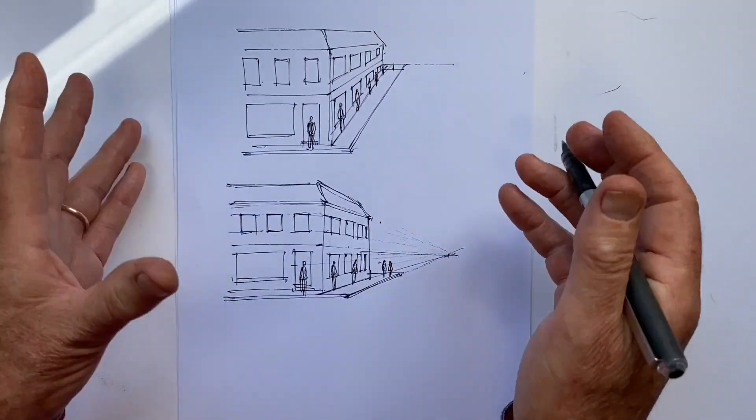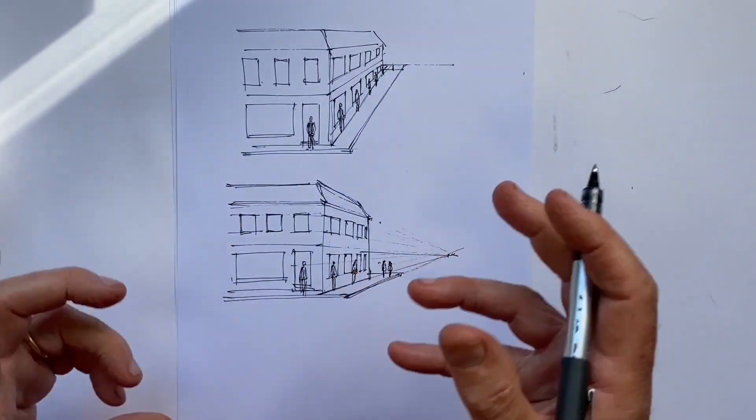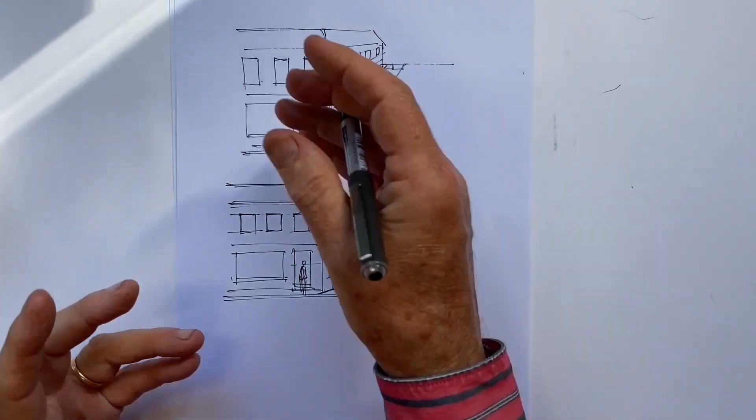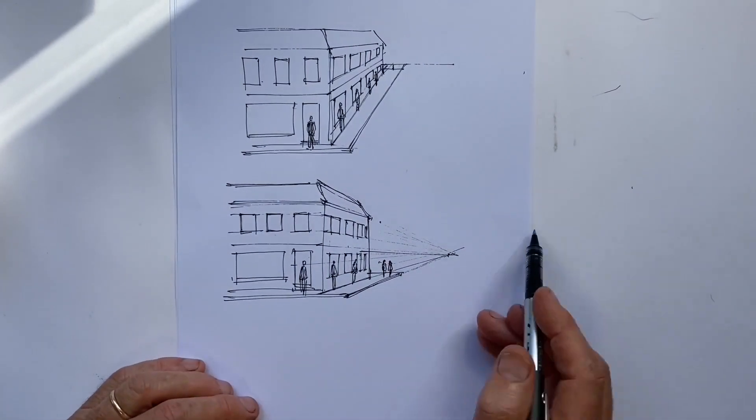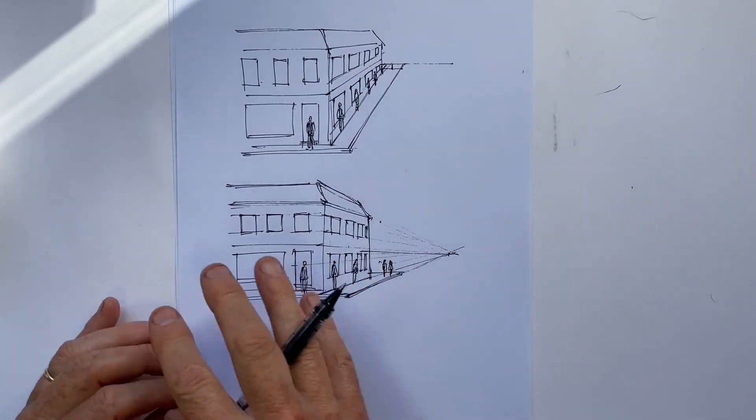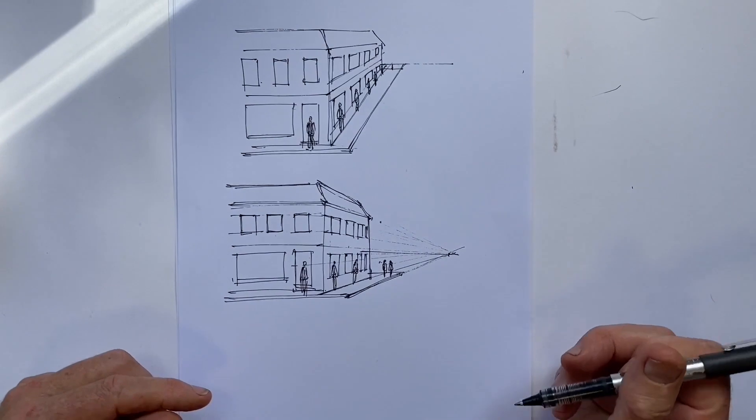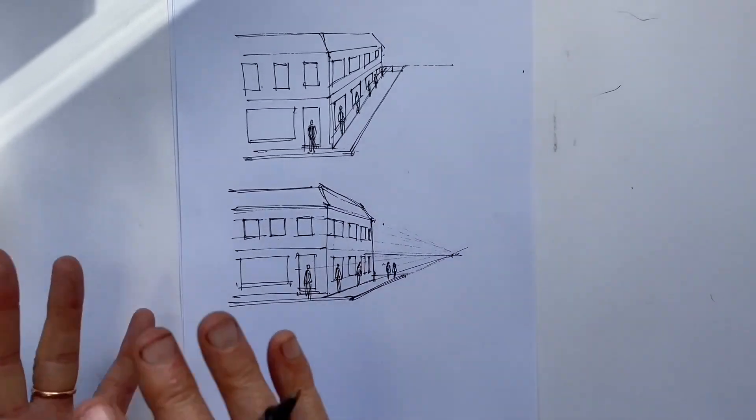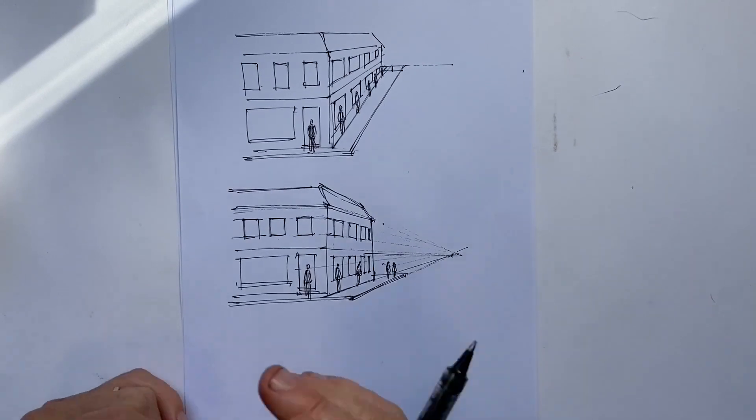So here we have the same scene with a much more credible perspective scale used. And so suddenly there isn't the same awkwardness. It's clear that this isn't an uphill street, this is actually a level street. There's consistent use of one eye level. The foreshortening means that this wall looks like it sits back in the right spot as it moves away.